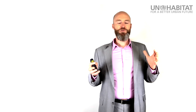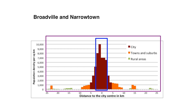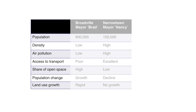Broadville is a very large municipality. It encompasses the central city center, but also the suburbs, some towns, and some further away rural areas. Narrowtown is much smaller — it only has a little part of the city center and doesn't include the suburbs, the surrounding towns, or rural areas. Over time, people move out of the city center into the suburbs, and some of the farther outlying towns and rural areas are growing.